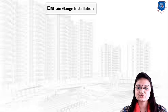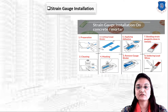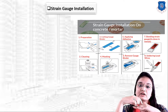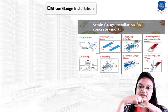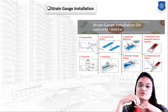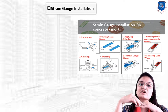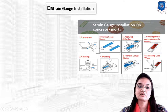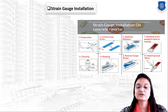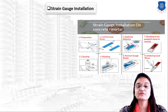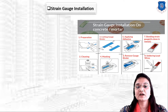Next is strain gauge installation. A strain gauge measures strain — when force is applied to an object, the resistance of the strain gauge changes, and by measuring this resistance change we can measure the applied force. The installation procedure on concrete involves these steps: preparation, cleaning, cutting the gauge binder, masking, applying adhesive, removing the gauge binder, bonding the strain gauge, and soldering lead wires.